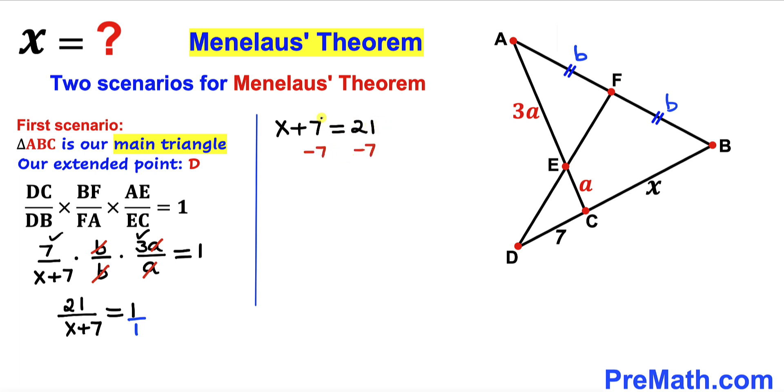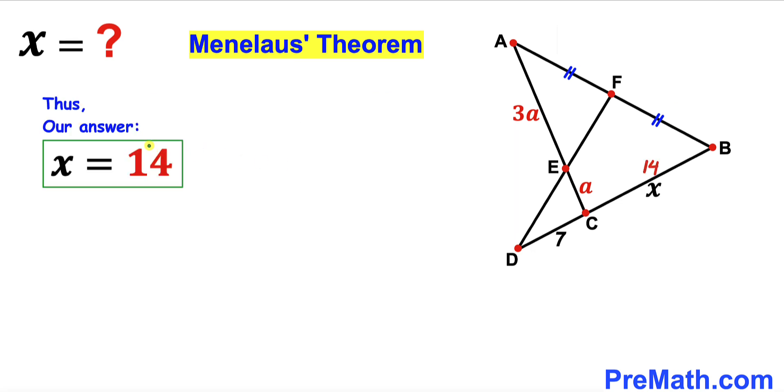Let's go ahead and subtract 7 from both sides. This is gone. So therefore our X value turns out to be 14 units. So thus our X value turns out to be 14 units by using this Menelaus' theorem. And that's our final answer.